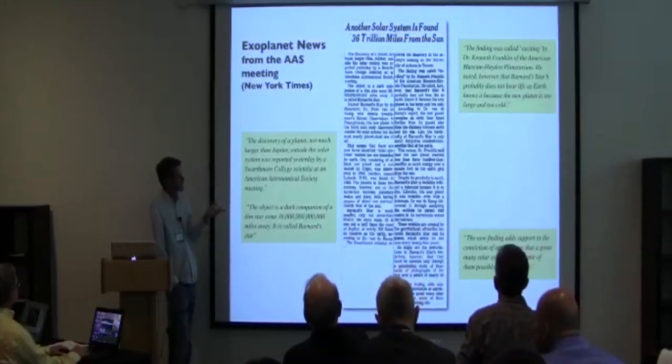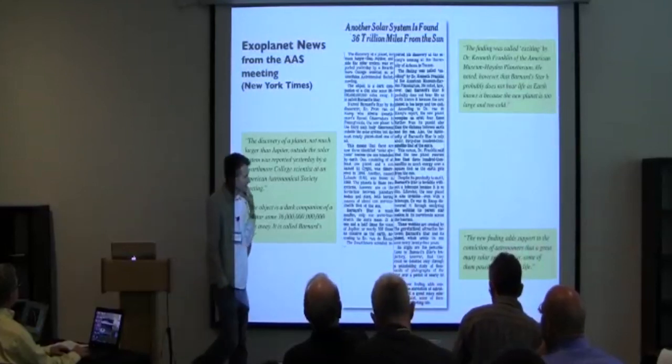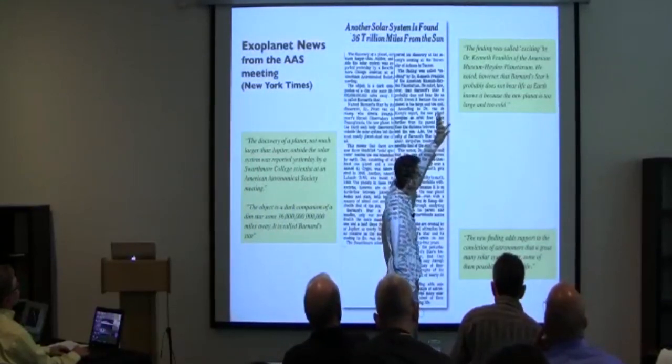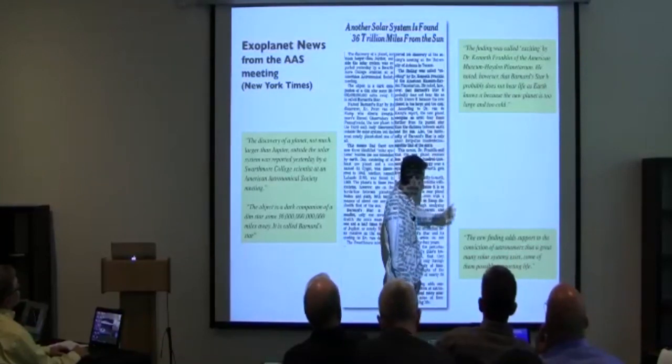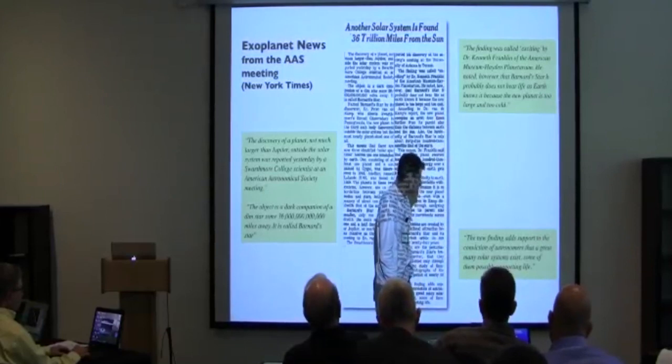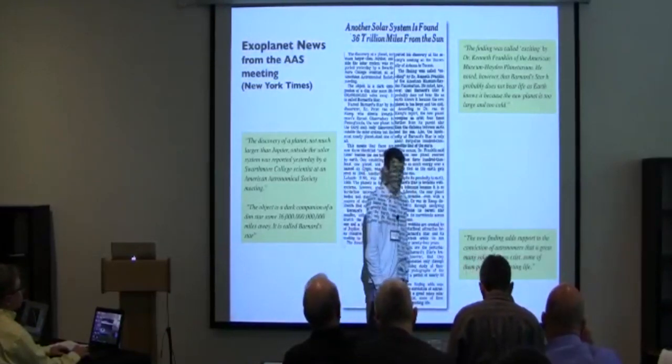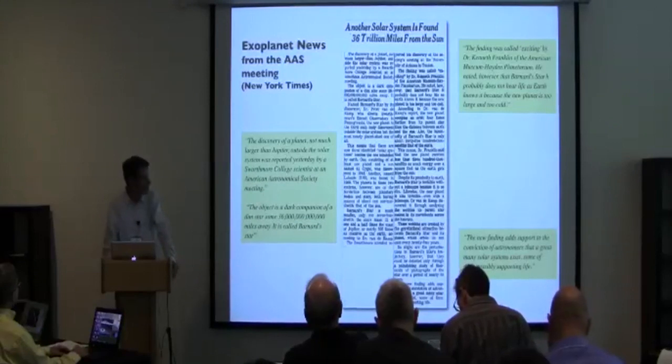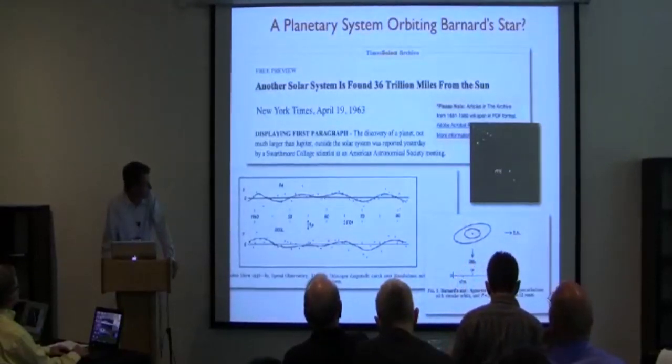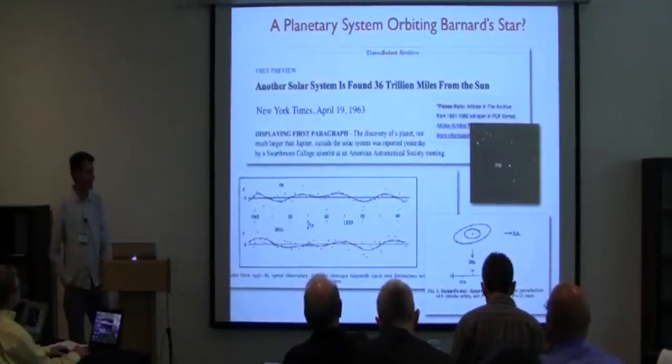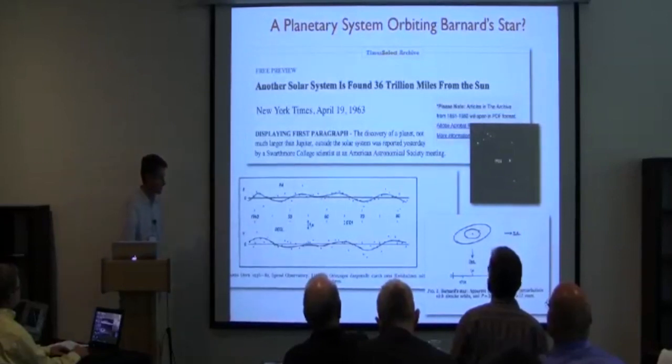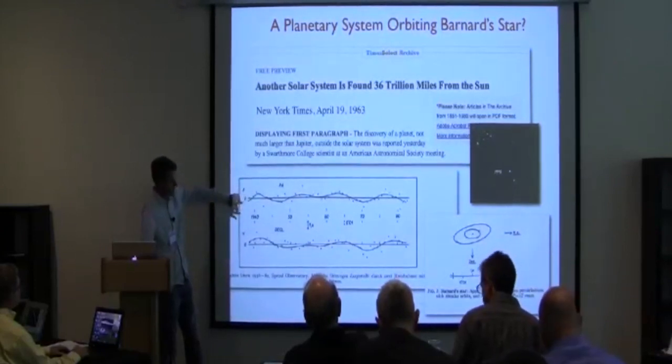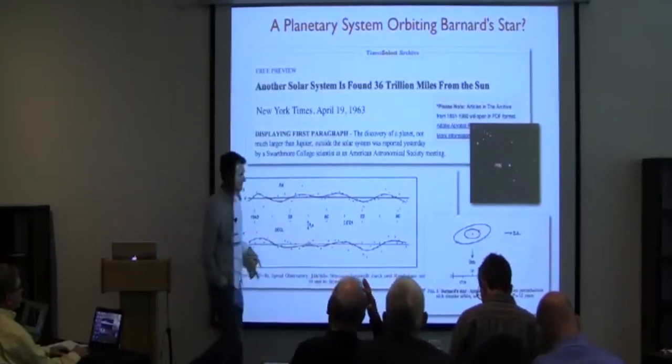This was recently reported about Swarthmore College scientists at the AAAS meeting, and it's orbiting Barnard's star. Whenever you find these planet articles, there's always talk about it's not really like the Earth, but it's exciting nevertheless. What's interesting about this article is that it wasn't from the most recent AAAS meeting. Rather, it was from a meeting in 1963 announcing the discovery of a planet orbiting Barnard's star. This was done by Peter Van de Kamp. By 1969 he found another planet around Barnard's star.